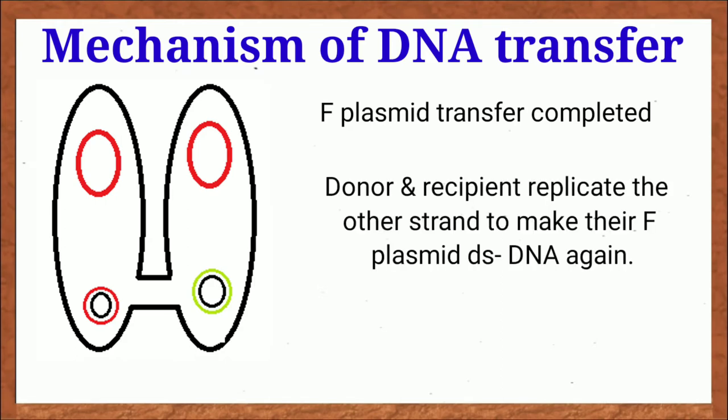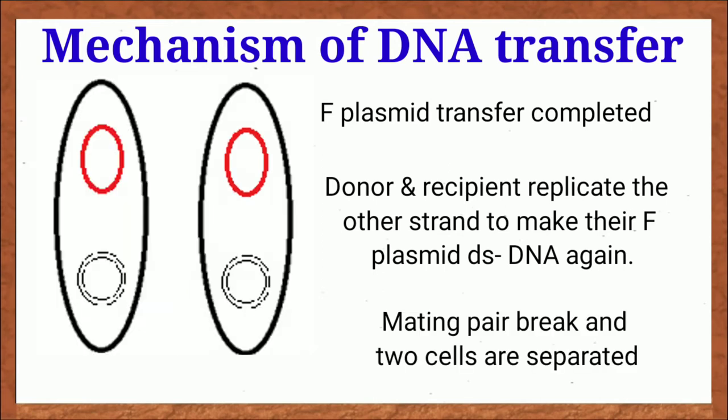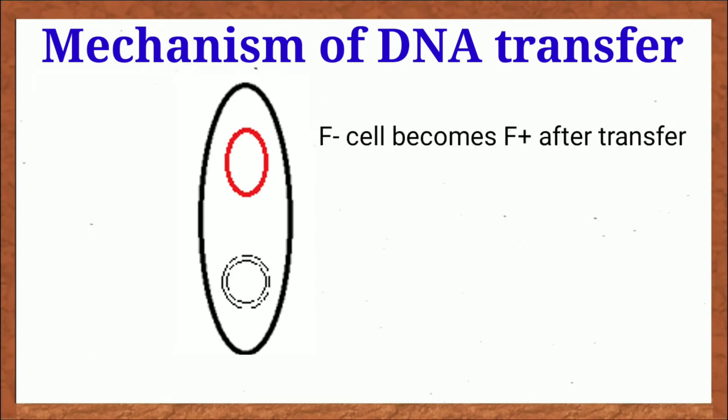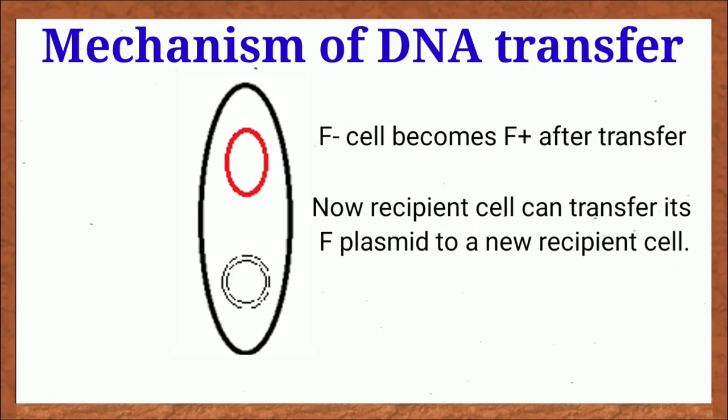When F plasmid transfer is completed, mating pair breaks and the recipient cell synthesizes the other or complementary strand to make it double-stranded DNA, just like the F plus cell. Now F minus cells become F plus cells and able to transfer its F plasmid to other F minus cells.